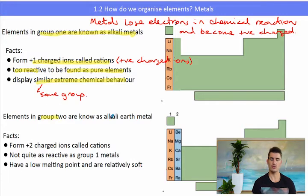Elements in group 2 are known as alkali earth metals. Because they are in group 2 they have 2 electrons in the outer shell. So they form plus 2 charged cations. They are not as reactive as group 1 metals. And they have a low melting point and they are relatively soft. They are not hard metals.